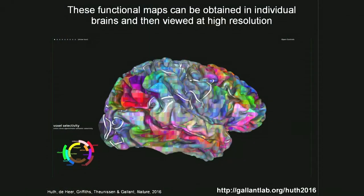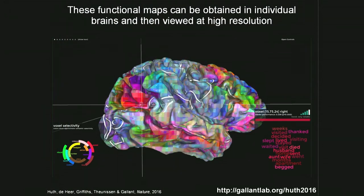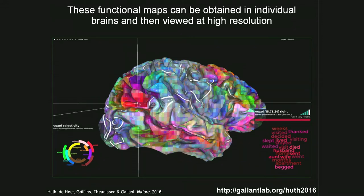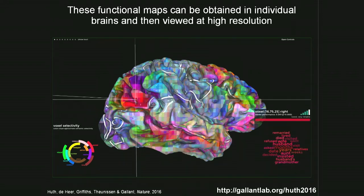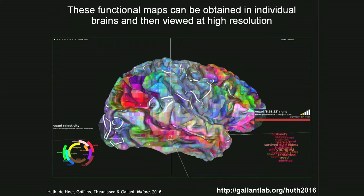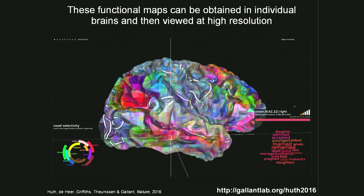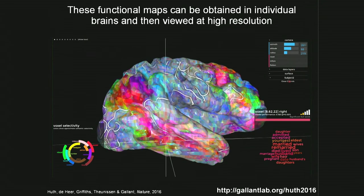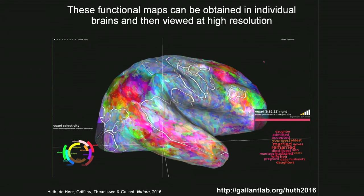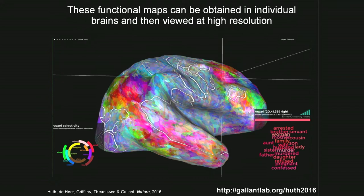We can actually interrogate individual locations in the brain. This is a little brain viewer you can play with — it won't run on your cell phone, but it'll run on your laptop just fine. You can click around different locations in the brain and find the semantic concepts that our experiment predicts that part of the brain would be activated by. Here I'm clicking through several social areas — there's a lot of social information represented in the human brain, as you might expect because humans are very social animals.